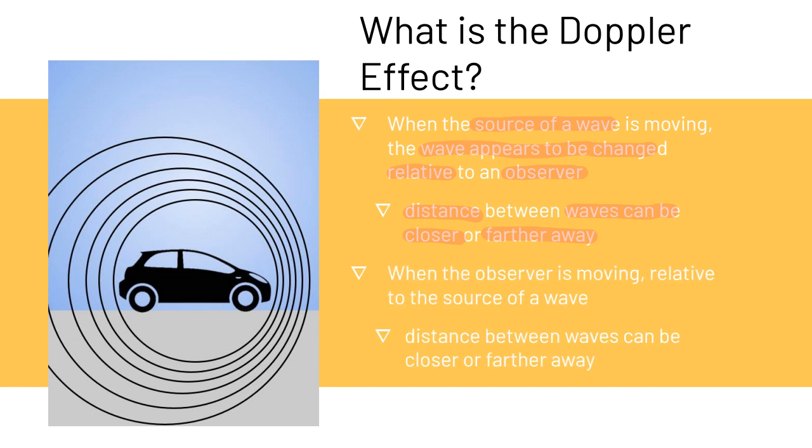Similarly, when the observer is moving relative to the source of a wave, the distance between the waves can be closer or further away relative to the source of the wave. We will get into this in more detail in the next slide.